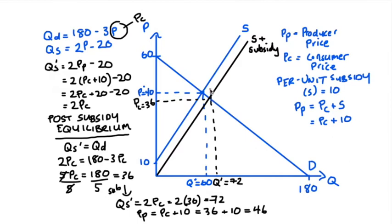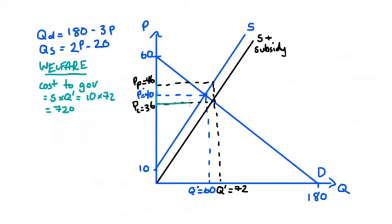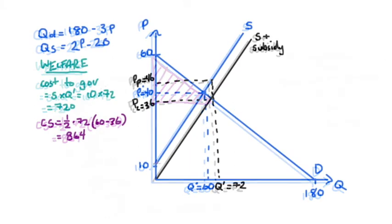Now let's assess welfare after the subsidy. The government cost is the subsidy per unit times the new quantity: S × Q' = 10 × 72 = 720. That's represented visually as a rectangle with base 72 and height 10. Consumer surplus is now the triangle below demand above PC: CS = ½ × 72 × (60 − 36) = ½ × 72 × 24 = 864.